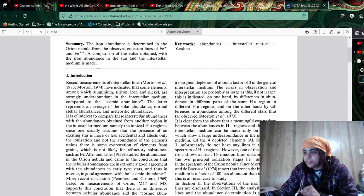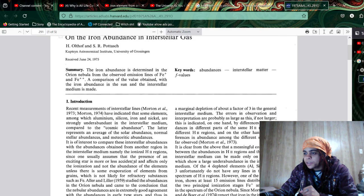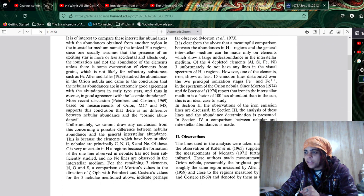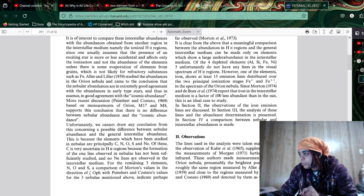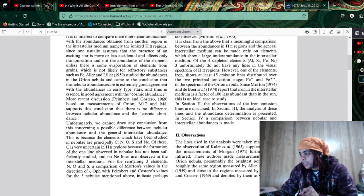I thought I saw something about, Orion, alright. Oh. I should have stayed right the fuck there in my dumbass. Aller and Liller in 1959 studied the abundances of the Orion Nebula and came to the conclusion that the nebula abundances are in extremely good agreement with the abundances in early type stars and thus, in essence, in good agreement with the cosmic abundance. Let's see. I mean, like, you guys can take the time to read this.